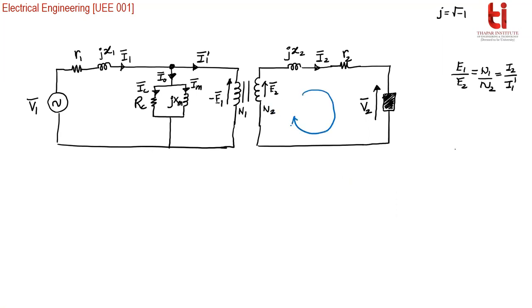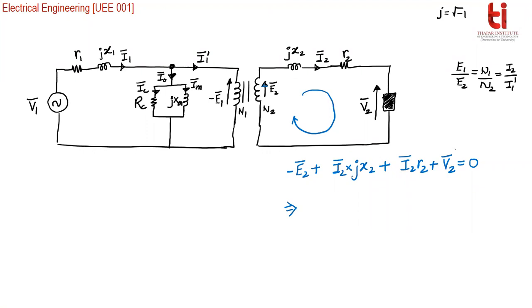In secondary side, we will apply KVL. Of course, this is an alternating voltage, which means the polarity of the voltage is changing and the direction of the current is changing. To write equations in phasor terms, we will assume that the arrowhead is at higher potential and the tail is at lower potential. So the equation for KVL at the secondary side will be: minus E2 bar plus I2 multiplied with Jx2 plus I2 multiplied with R2 plus V2 bar equals 0. This gives us E2 equals V2 plus I2 R2 plus J I2 into X2.